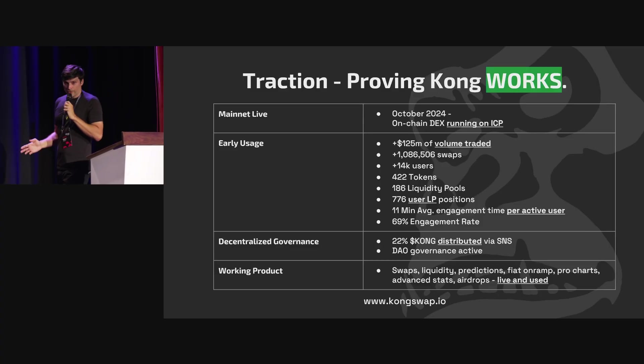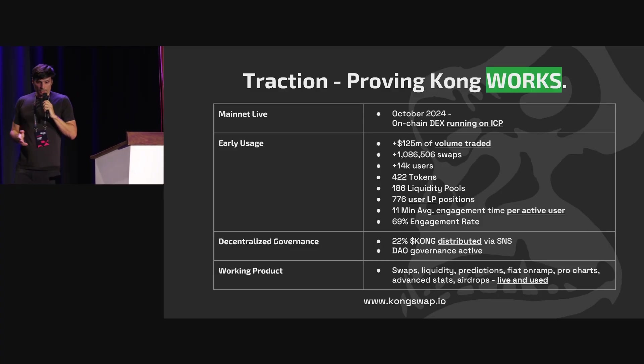Either direction — ICP to Solana or Solana to ICP — 10-second swaps, no bridges, no intermediation, just native settlement. You'll be able to connect with your Phantom wallet and sell your Solana to buy ICP, or connect with your OISY wallet and sell your ICP to buy the Trump token — no limitations whatsoever.